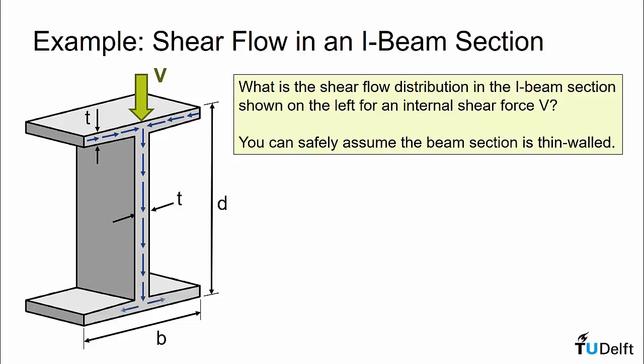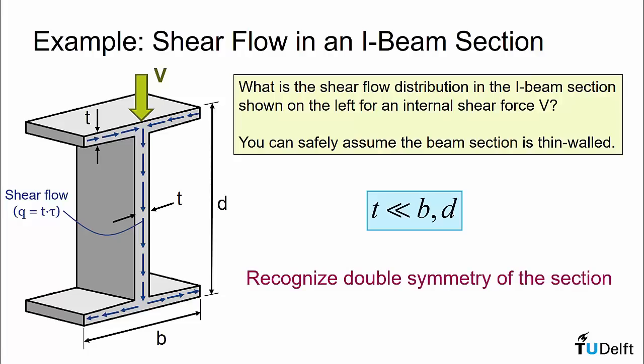We are going to look at trying to determine the distribution of this shear flow through this section, and because the problem is thin-walled, it is safe to assume, although we do not have the magnitudes of the dimensions, that t is much much smaller than the height or width of the cross-section.